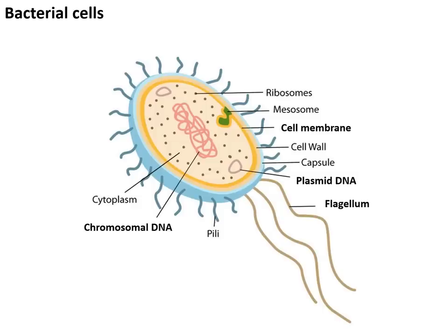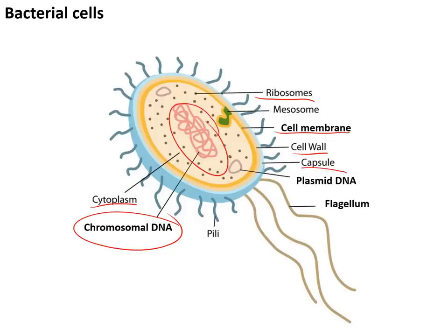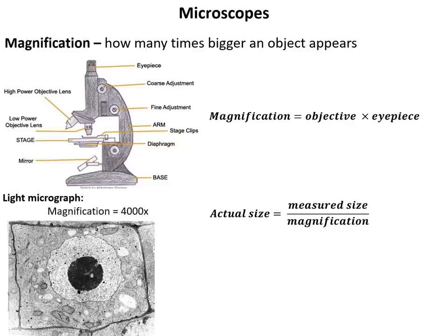Bacterial cells have many of the normal features of a cell including ribosomes, a cell membrane, a cell wall, and cytoplasm. However, they do not have a nucleus. Instead they have their DNA as chromosomal DNA — a large piece — and plasmid DNA, a much smaller piece. Some bacteria also have flagella to help them move.